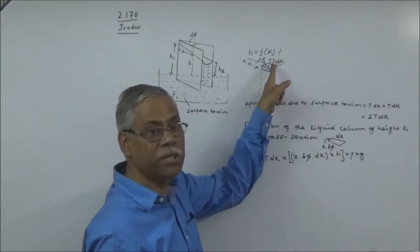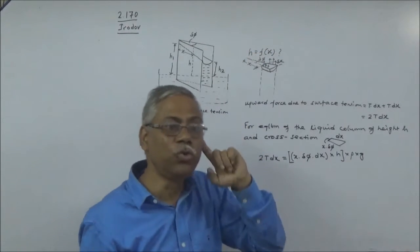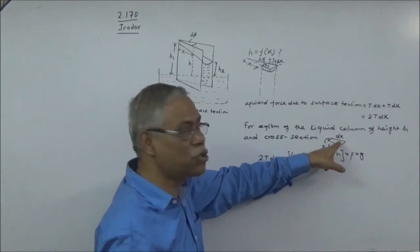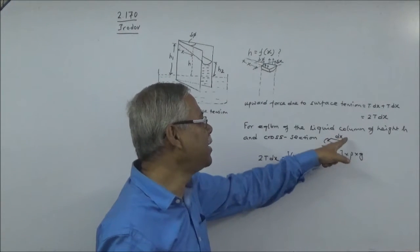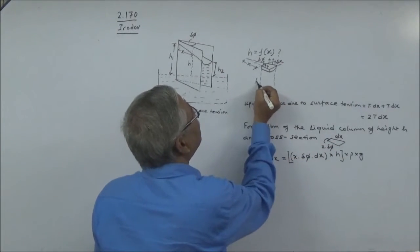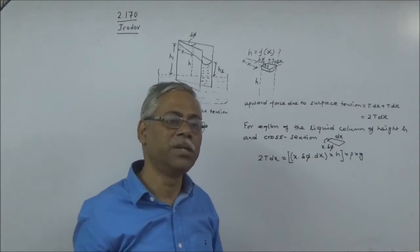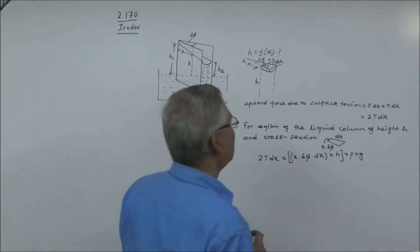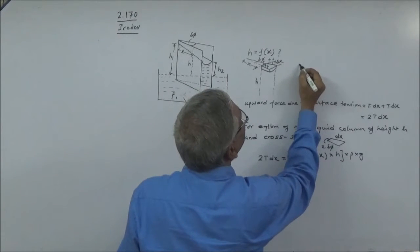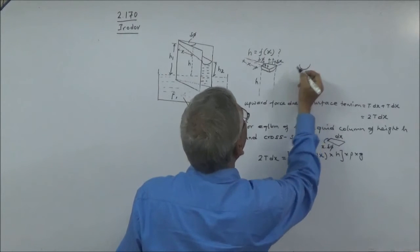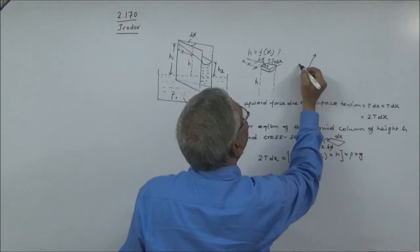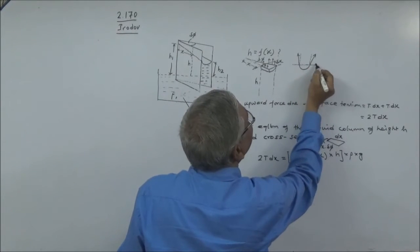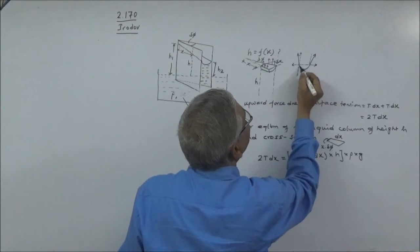So the surface tension force 2T·dx balances the weight of the whole column. Since dx is very small you can take this to be a rectangle; the area is dx × x·dφ, multiplied by height h, then by ρ and g. Now, the contact angle is θ — if you look at the cross-section from the front, surface tension acts at an angle, so we need to resolve it.